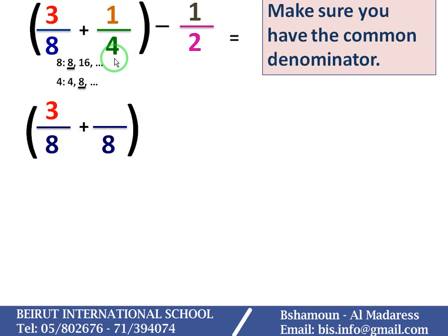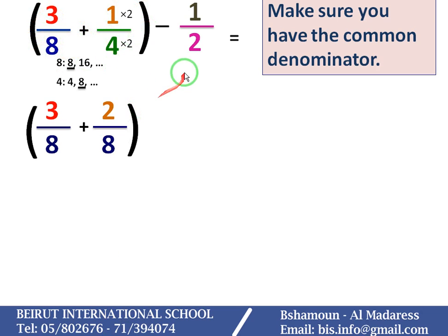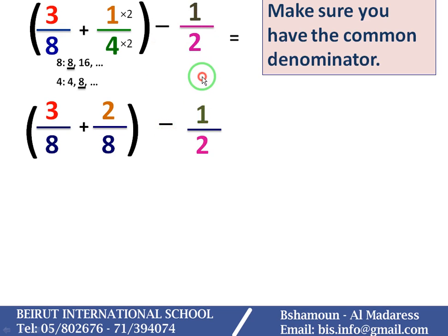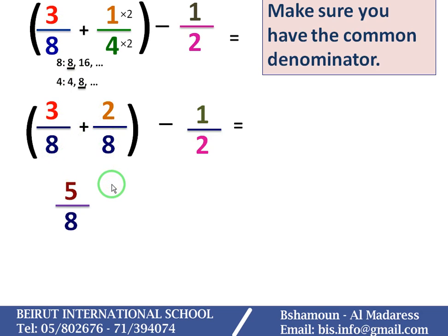Plus, to get denominator 8, I multiply the 4 by 2, so I multiply the numerator by 2 and I get 2 over 8. Now I can add the 2 fractions since I have the same denominator. So 3 plus 2 is equal to 5 over 8.